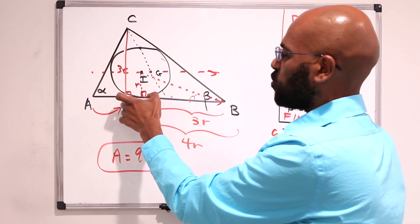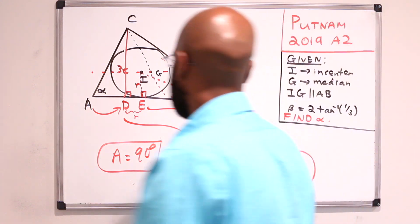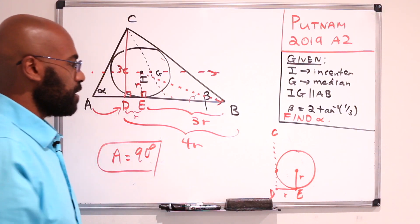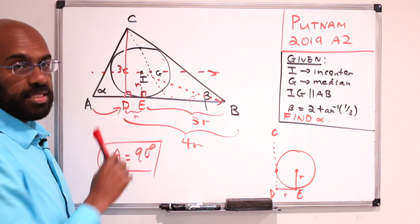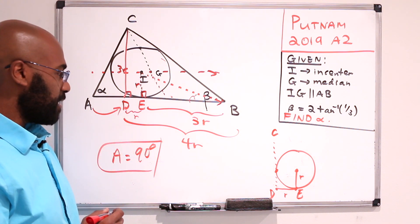It allowed us to completely circumvent a trigonometric argument for finding alpha by taking a look at this diagram right over here to realize that A and D actually have to coincide, telling us that alpha is, in fact, 90 degrees.